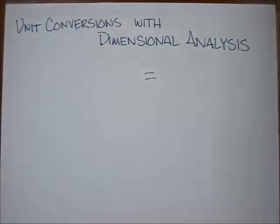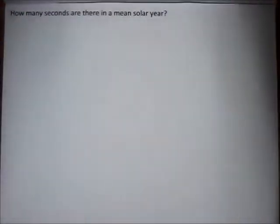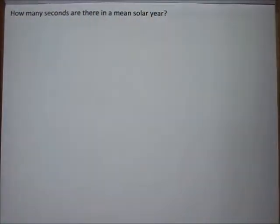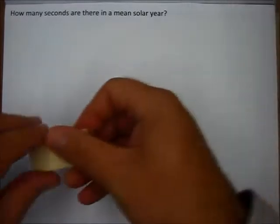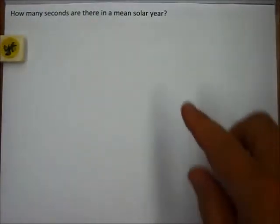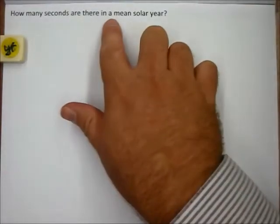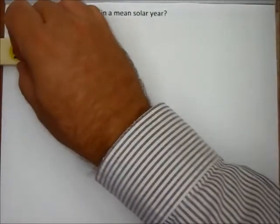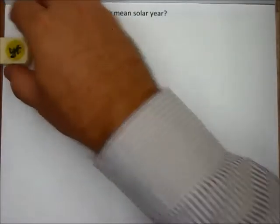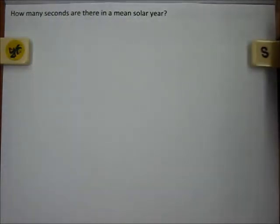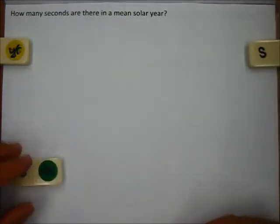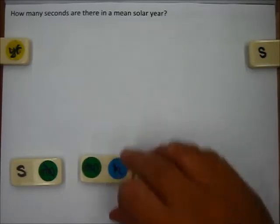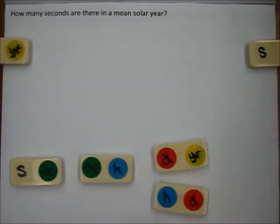In this example we're looking for how many seconds are there in a mean solar year, and so I'm going to start with years—this is going to be the trick in calculating it. A mean solar year means one solar year, so years is my starting point and I'm trying to get on the other side to seconds. You guys know a lot of these already, but we have some unit conversions we're aware of that can convert years and days and hours and minutes, minutes and seconds, etc.